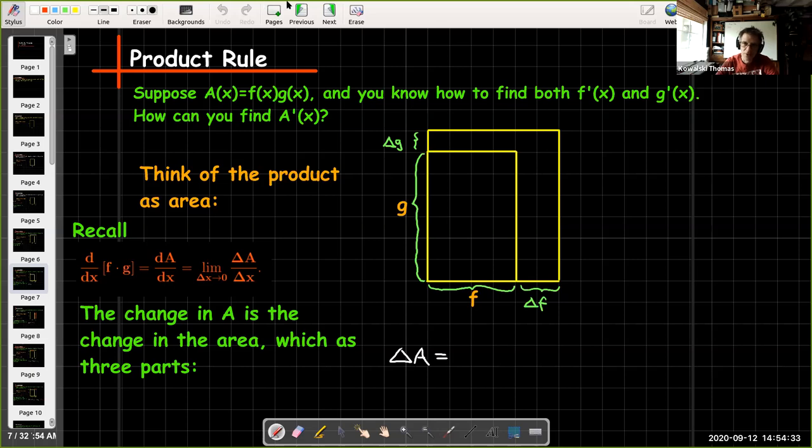And we're going to look at that with three parts. The first part is going to be this rectangle which has base Δf and height g, so its area is Δf times g. The second part is going to be this rectangle on the top whose base is f and whose height is Δg. And then the third part is this small rectangle in the upper right hand corner which has base Δf and height Δg.